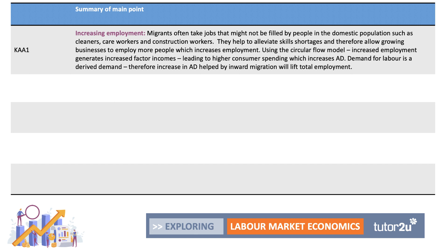The first KAA point is that migration can increase employment in the economy. Migrants often take jobs that might not be filled by people in the domestic population — for example, cleaners, care workers, and construction workers. Inward migration helps to alleviate skills shortages and therefore gives greater latitude for growing businesses to employ more people, which increases employment. Migration relieves the constraint of skill shortages that could be holding businesses back.